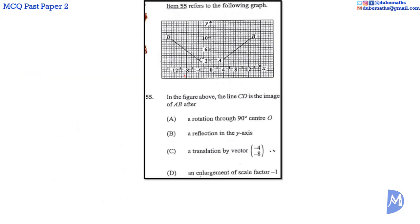Question 55. CD is the image of AB. This is a reflection in the Y axis. The answer is B. It may not be immediately obvious. Let me go slower. Let me tell you why the other three answers are wrong.